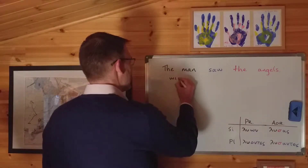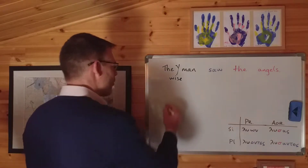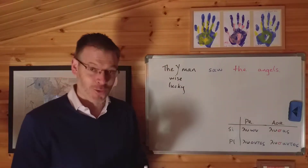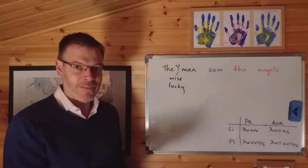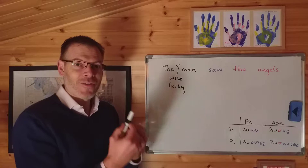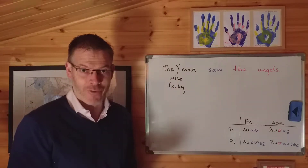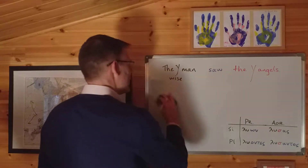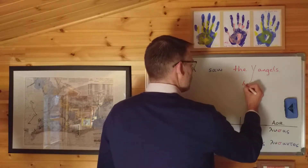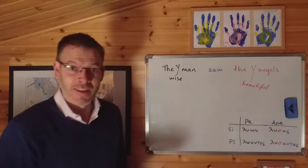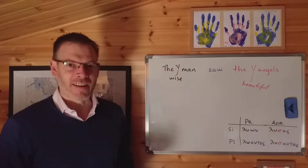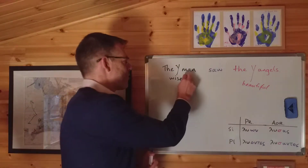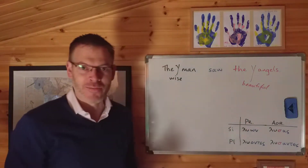So we could say, for example, 'The wise man saw the angels,' or 'The lucky man saw the angels,' or 'The frightened man saw the angels.' These are adjectives — words that say a little bit more about the noun, that describe a quality of the noun. Similarly, you could do the same thing with the object: 'The wise man saw the beautiful angels.' An adjective describing an attribute of the man, and another adjective describing an attribute of the angels.